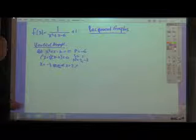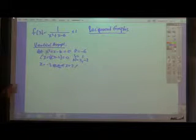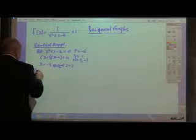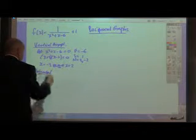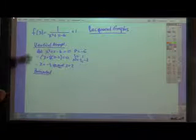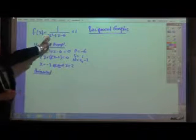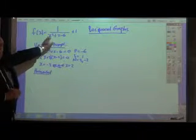So for our purposes, we can say that the vertical asymptotes are x equals negative 3, and x equals 2, just solving using the null factor theorem there.